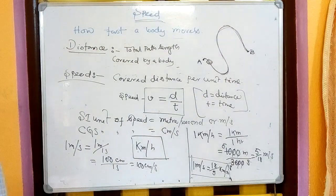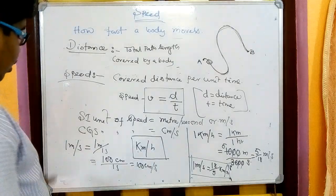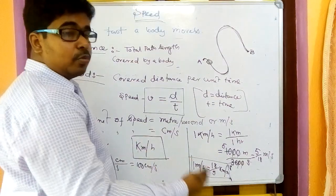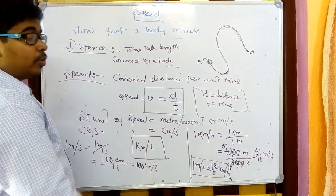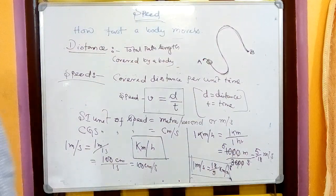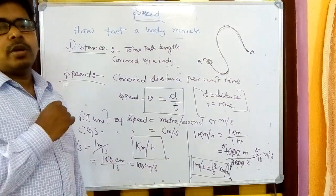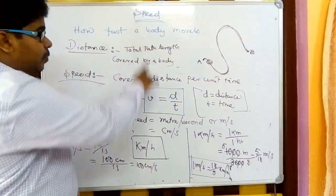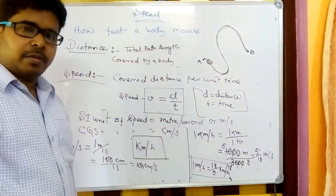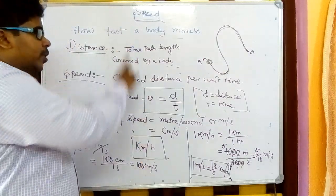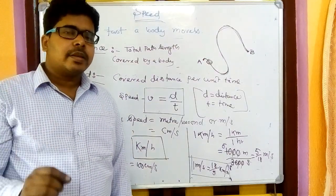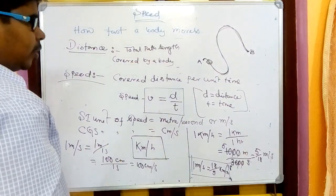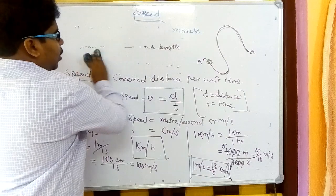Make sure to practice these conversions at home. For example: 5.5 m/s equals how many cm/s? 10 km/h equals how many m/s? 72 km/h equals how many m/s? These conversions are needed because in numericals the answer should be in SI units. For speed, all answers must come in SI units.